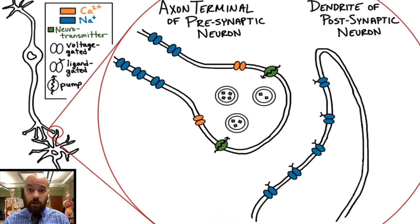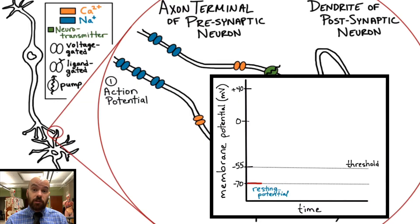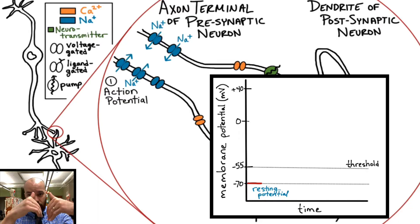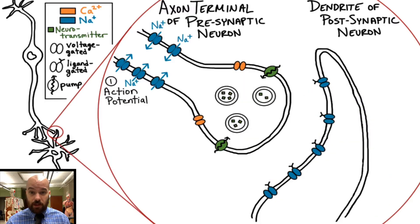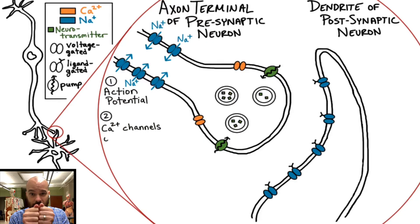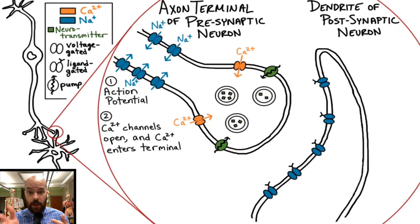Now that we have all the parts of the synapse drawn, let's get into the actual steps of synaptic transmission. The first step: this whole process has to start with an action potential. If you need to review action potentials, I have a video linked in the description. As that action potential travels down the neuron, it causes voltage-gated sodium channels to open so that more sodium rushes into the cell, which makes the neuron more positive, or depolarized. On the axon terminal, we have voltage-gated calcium channels, so when the depolarization reaches the axon terminal, it's going to cause those voltage-gated calcium channels to open up, allowing calcium — which is more abundant outside than inside the neuron — to come rushing in.